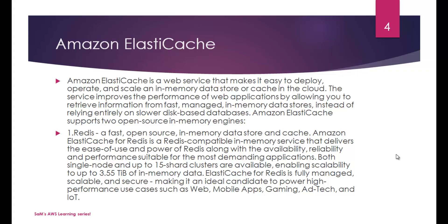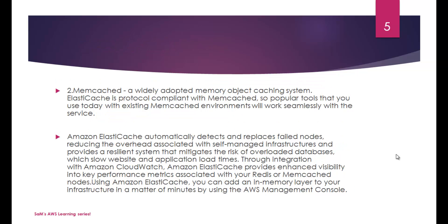Amazon ElastiCache supports two open-source in-memory engines. The first is Redis — a fast, open-source in-memory data store and cache. ElastiCache for Redis is a Redis-compatible in-memory service delivering ease of use and power of Redis along with availability, reliability, and performance. Both single-node and up to 15 shared clusters are available, enabling scalability up to 3.55 terabytes of in-memory data. ElastiCache for Redis is fully managed, scalable, and secure, ideal for web, mobile, gaming, ad-tech, and IoT use cases.